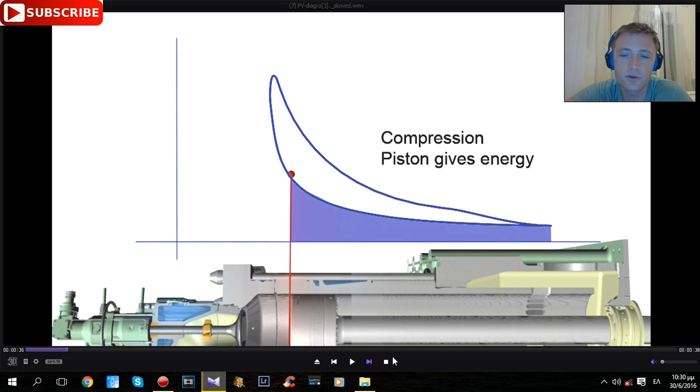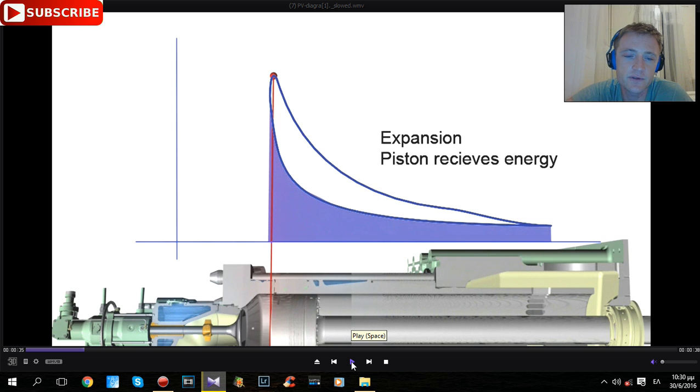As you can see, the piston coming from lower dead center to top dead center compresses the air inside the piston and cylinder. With this compression, the air inside and the combustion chamber will increase in heat.